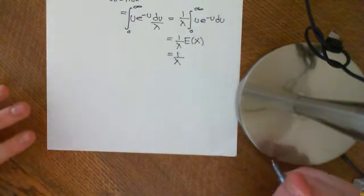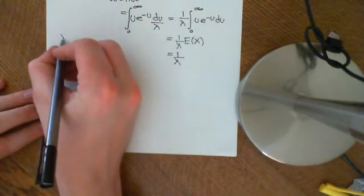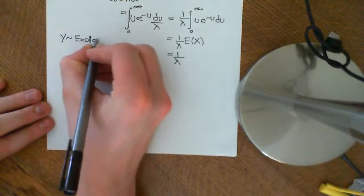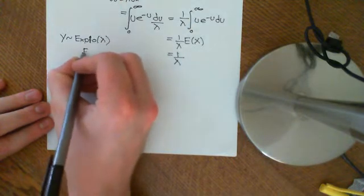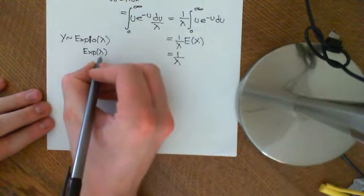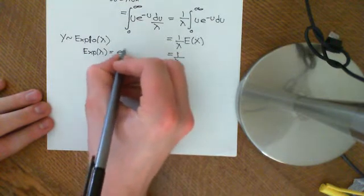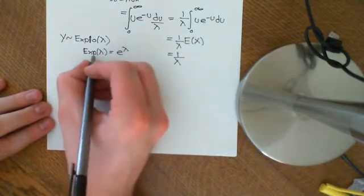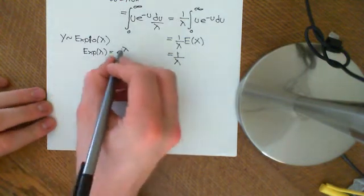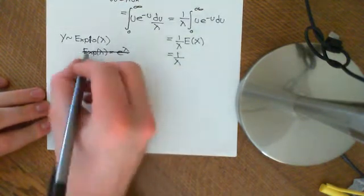Similar to the case of the expected value, if y is distributed exponentially with parameter lambda, we write 'expo lambda'. The reason you put that O there is because if you just put 'exp lambda', that might be mistaken for the actual exponential function — some people write exp lambda to mean e to the lambda — so you should write 'expo lambda' to avoid confusion.